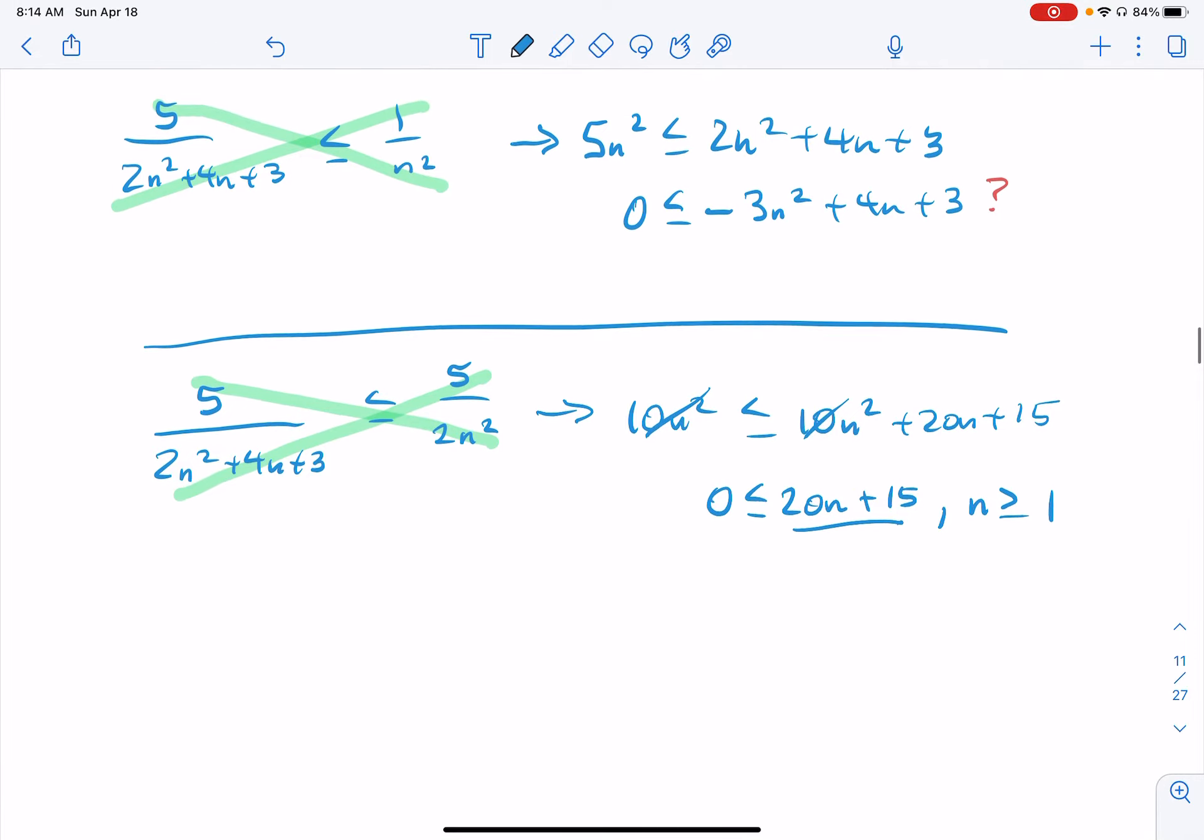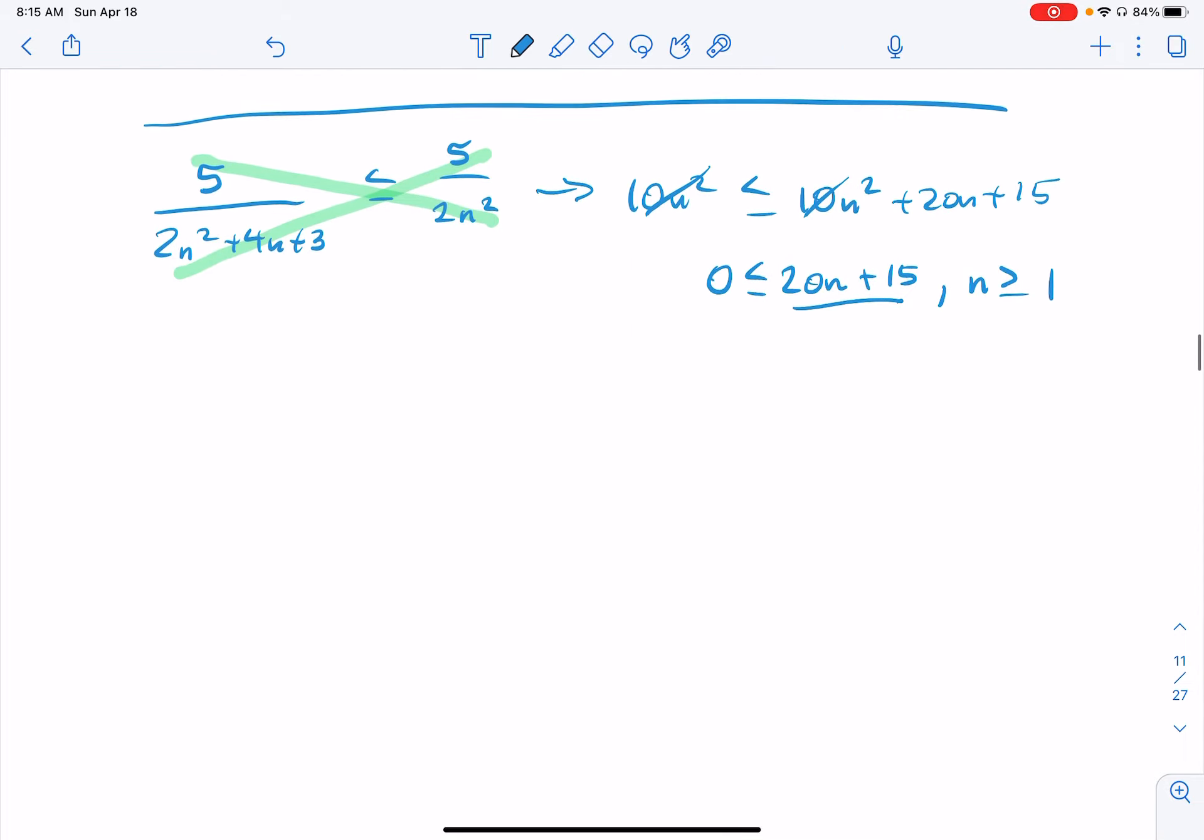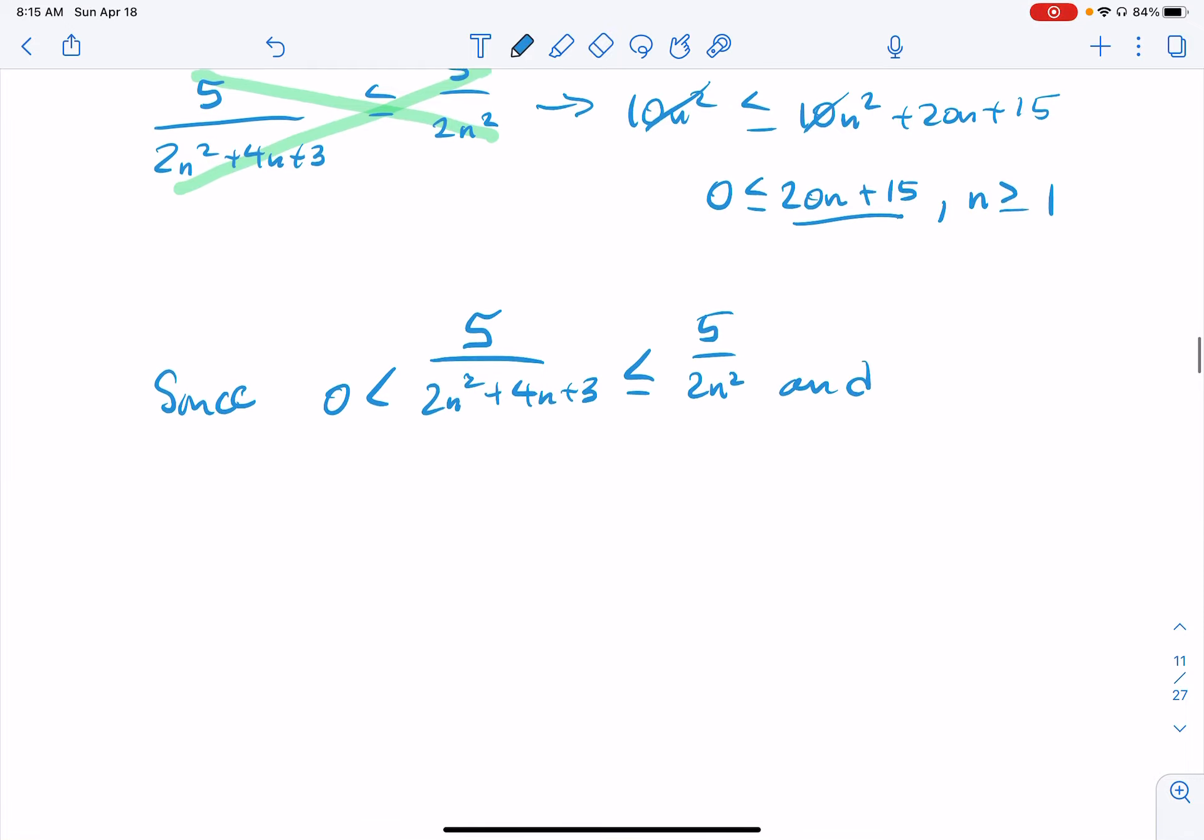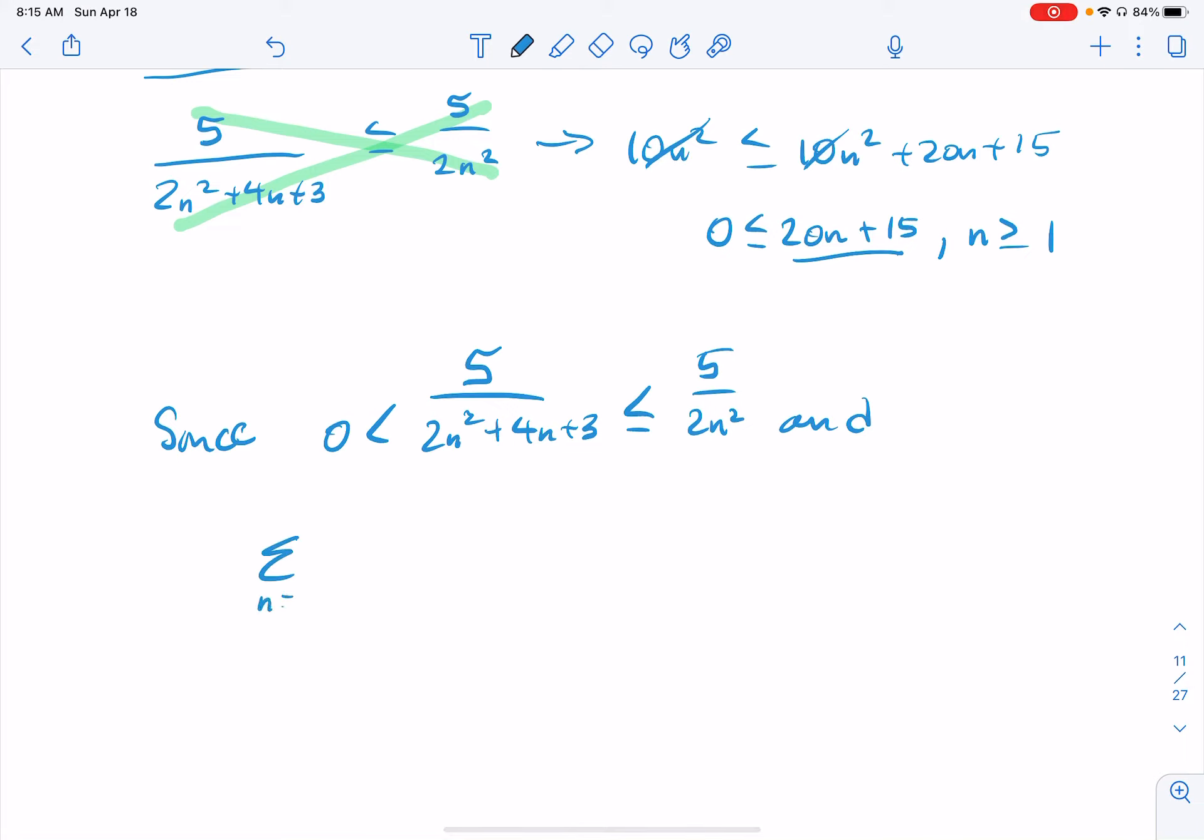Okay, so we have established the inequality. We've demonstrated that our series is smaller than a convergent one. So we need to write that up. We need to start with, since 0 is less than our series, which I think was 5 over 2n² + 4n + 3, which is less than or equal to 5 over 2n². And so there's the inequality. Now you have to discuss the convergence of the series composed of these terms. Series n equals 1 to infinity of 5 over 2n² is a convergent p-series.